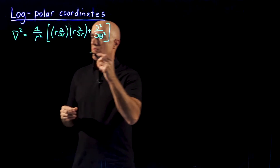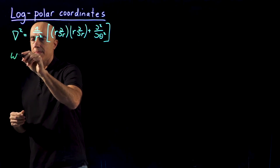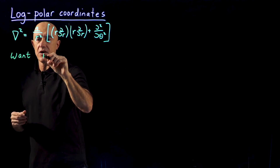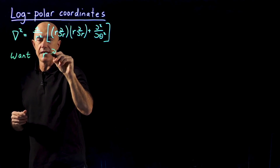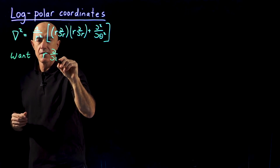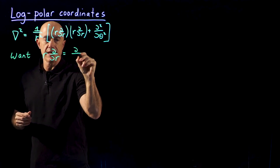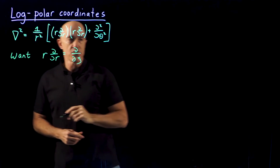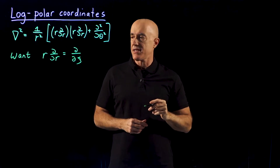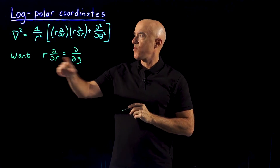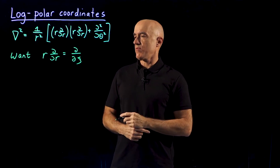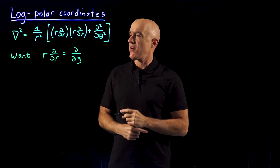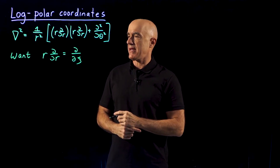So what we want here is for this quantity, R D/D R, to just be D/D of some new variable, which I'll call the Greek letter KSI. So this is what we would like, and to do that we can change variables to make it happen.